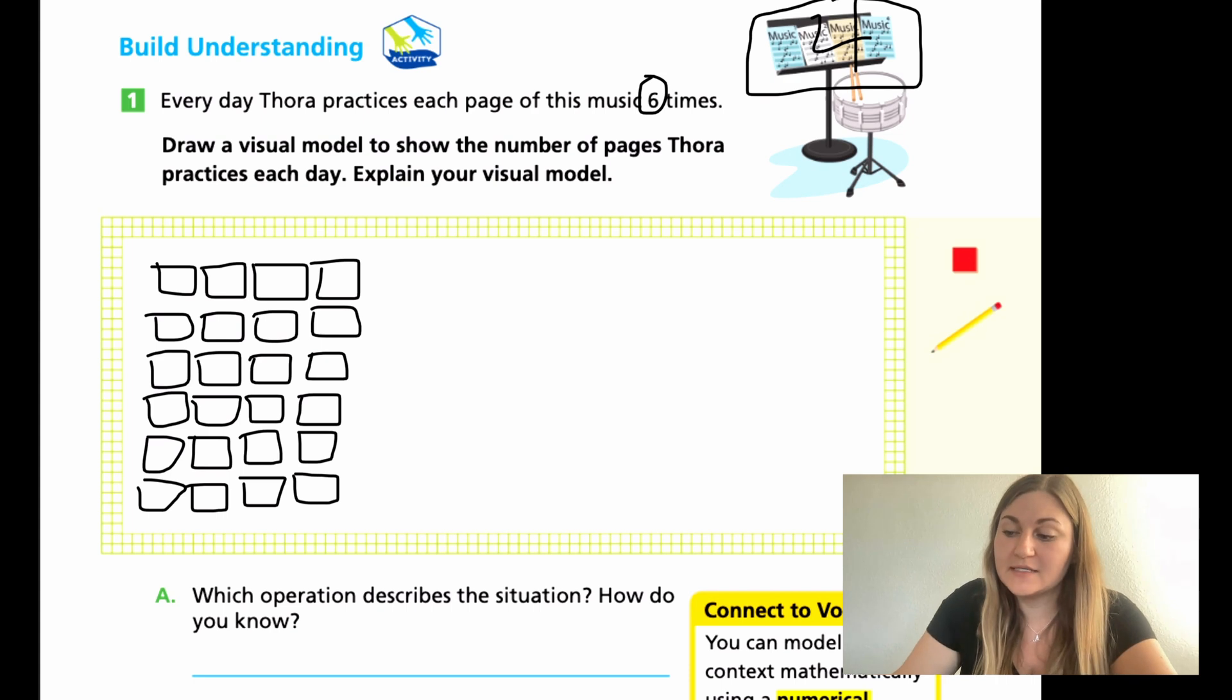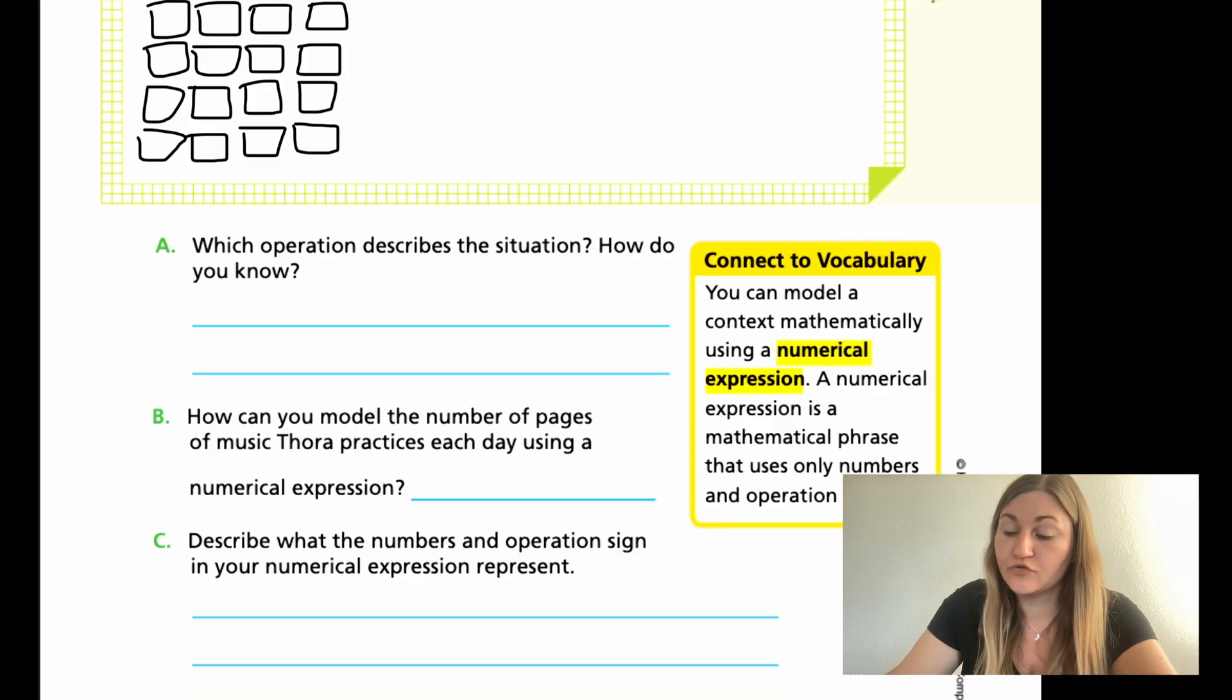Okay? So, I drew my visual model. Now, explain your visual. I want you to do that on your own. I'm going to go through these next 3 problems, and I want you to do them all together, and then I'll go over them in the end. Okay? So, for A, it says, Which operation describes a situation? Remember, operation is the adding, subtracting, multiplying, or dividing. And then, how do you know? So, explain how you know which one it is. B, how can you model the number of pages of music Thora practices each day using a numerical expression? Remember, numerical expression is our two numbers and the operation in between them. So, go ahead and write that expression. And then, C, describe what the numbers and operations sign in your numerical expression represent. So, explain the first number. What is it standing for? What is the operation standing for? And that second number, what does it mean in our problem? Okay? So, I'm going to go ahead and have you hit pause here, and then go ahead and finish the rest of this page.